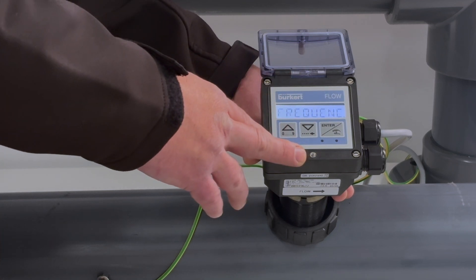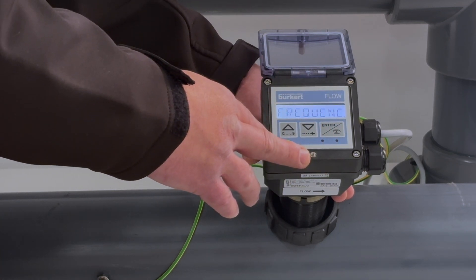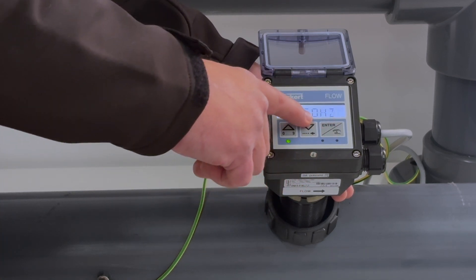Frequency depends on the type of install that you have. In Australia we work on 50 hertz AC current, which is what we're going to set for 50 hertz.